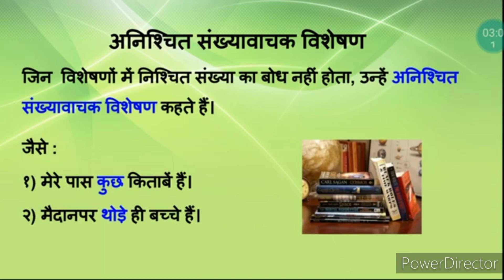Doosra upbhed hai Sankhyavachak ka - Anishchit Sankhyavachak Visheshan. Jin Visheshanon mein nishchit sankhya ka bodh nahin hota, unhe Anishchit Sankhyavachak Visheshan kehte hain. Jaise 'I have some books' - which means there are two or four books, no particular number can be said.